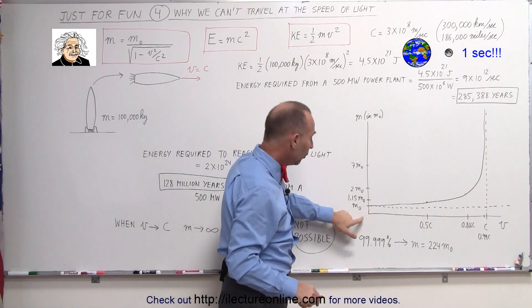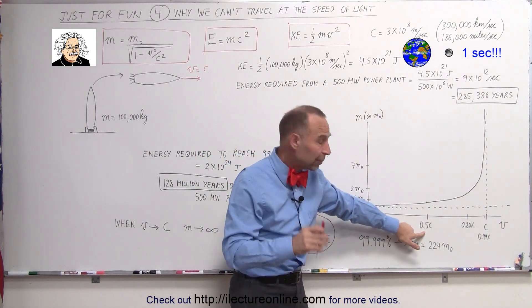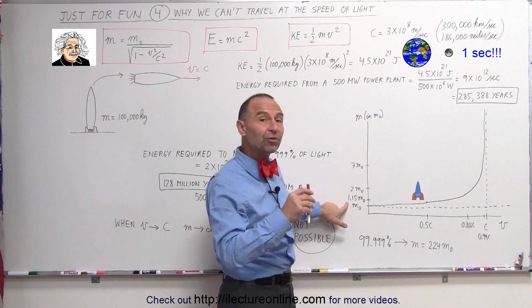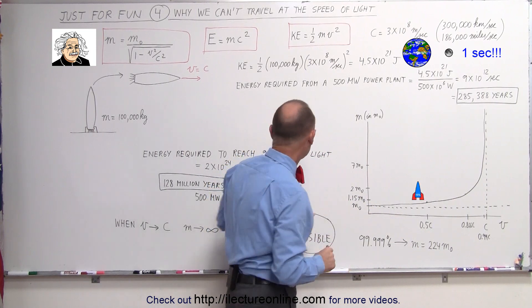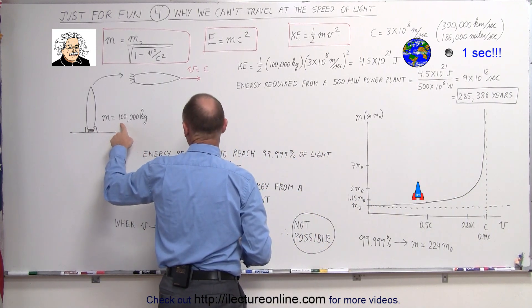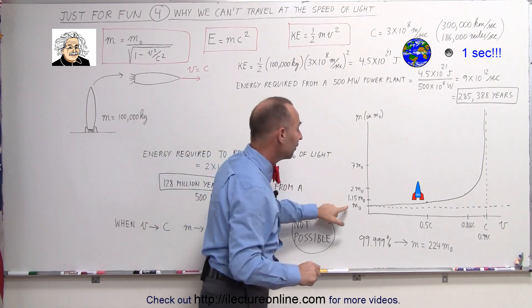For example, when an object starts traveling at 50% of the speed of light, it will have gained 15% more mass than when it started, which means the spaceship now weighs 115,000 kilograms instead of 100,000.